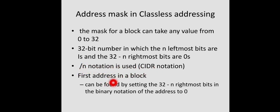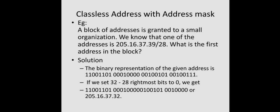The first address in a block can be found by setting the rightmost 32-n bits in the binary notation of the address to 0. The host address always starts from 0 by convention. So if we put all host bits to 0, we get the first address in that block, which corresponds to the network number.